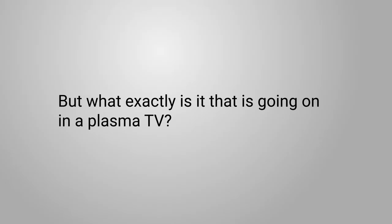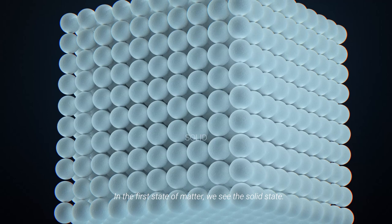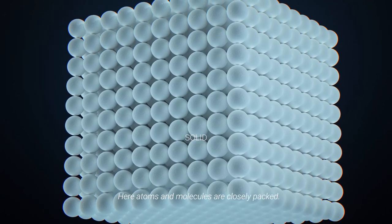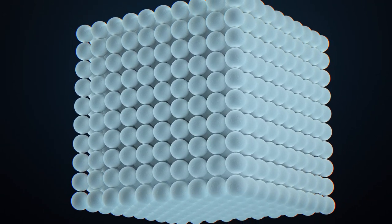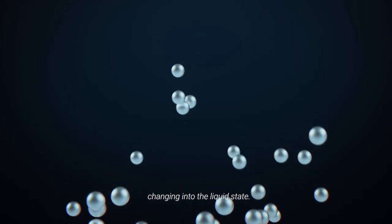But what exactly is it that is going on in a plasma TV? In the first state of matter, we see the solid state. Here, atoms and molecules are closely packed. If we heat up a solid, it will eventually melt, changing into the liquid state.